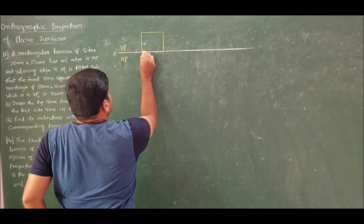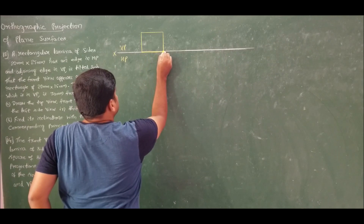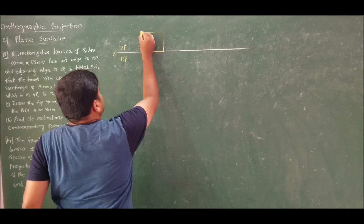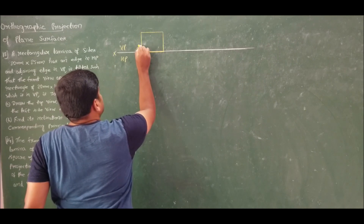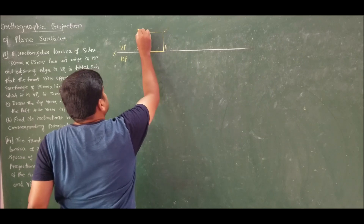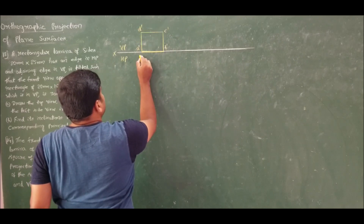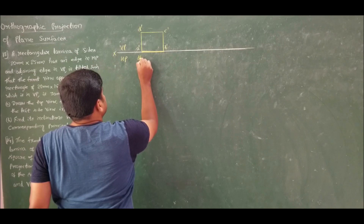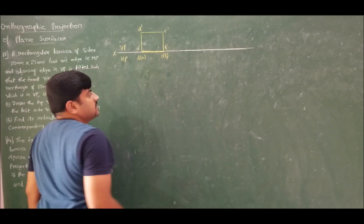When I take projection, it will be here. Let us call the corners A', B', C', D'. In the top view, D is visible, A is invisible, C is visible, and B is invisible.